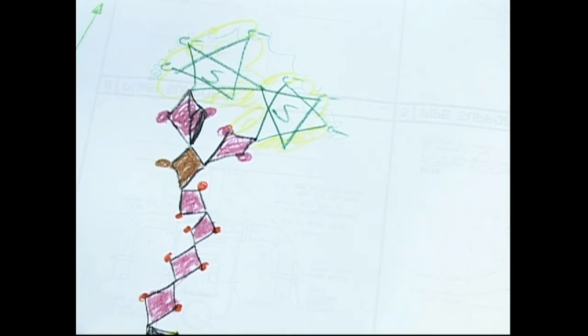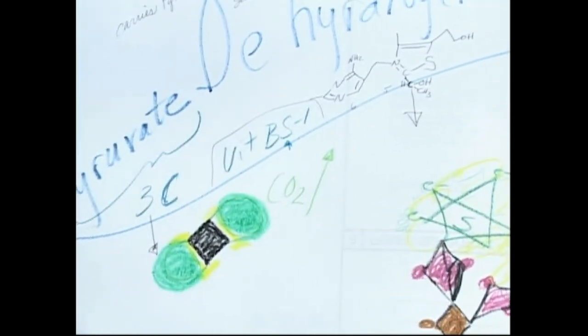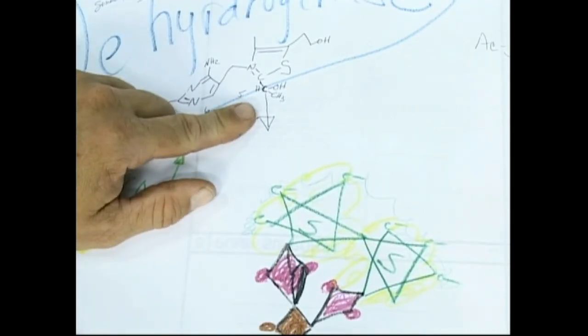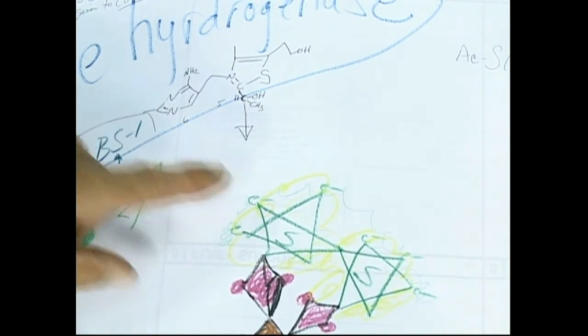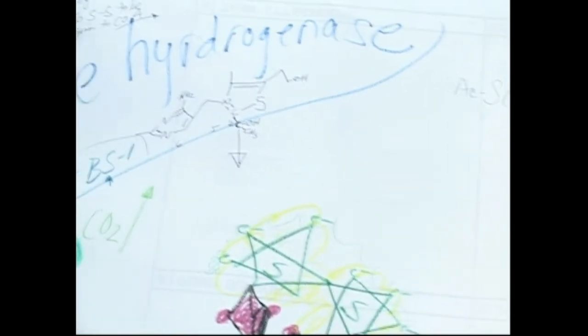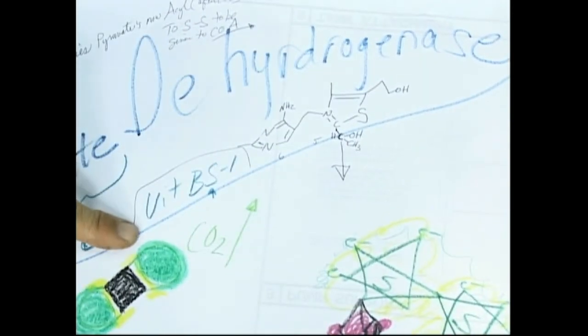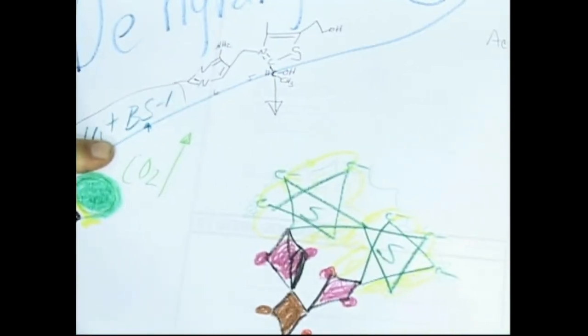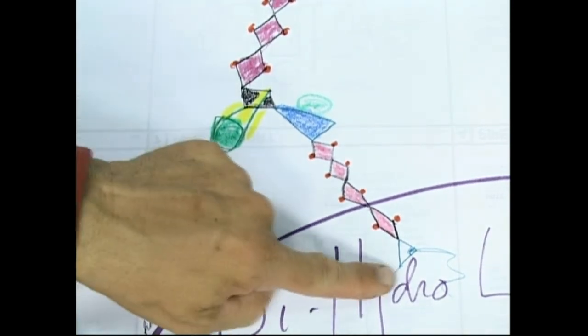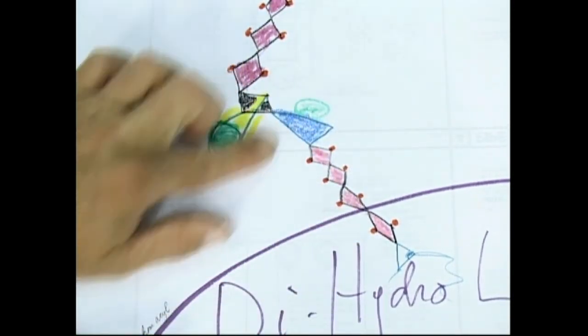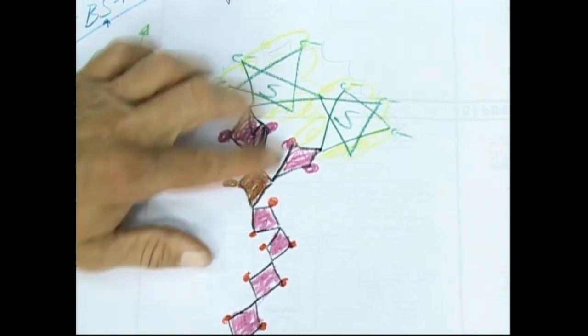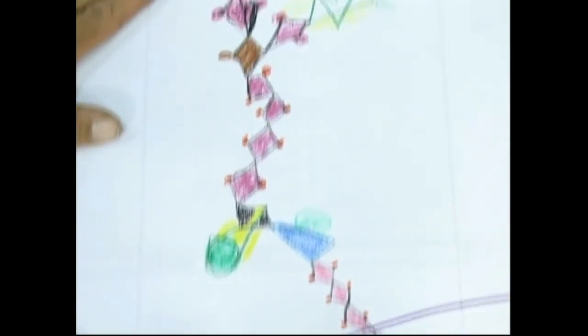So what happens is the pyruvate dehydrogenase has already gotten rid of a CO2 off it. So now it's holding an acyl group, and the way it's holding that is with vitamin B1, the one we call BS1. So this enzyme, see how it's on a long arm here? That's lysine, and then the 5 into the lipoic acid holding it. See how long that is? That's hanging right off.